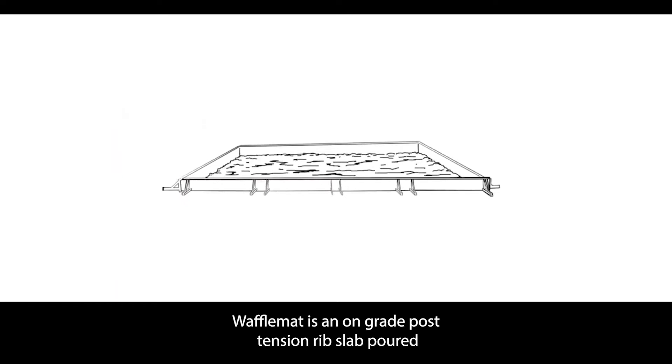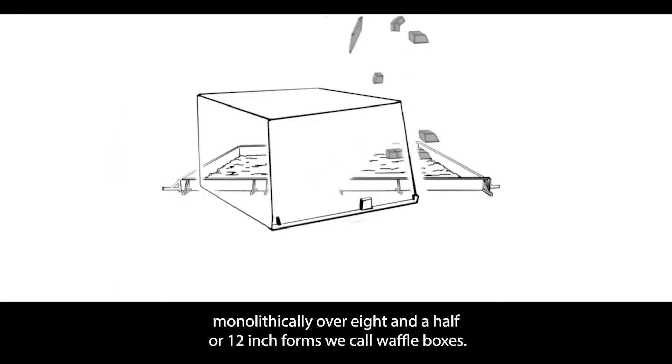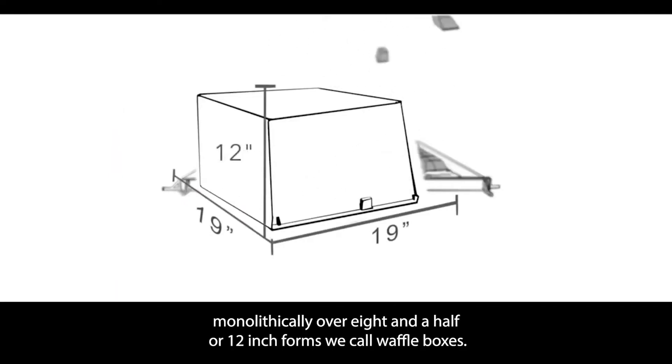Wafflemat is an on-grade post-tension rib slab poured monolithically over eight-and-a-half or 12-inch forms we call waffle boxes.